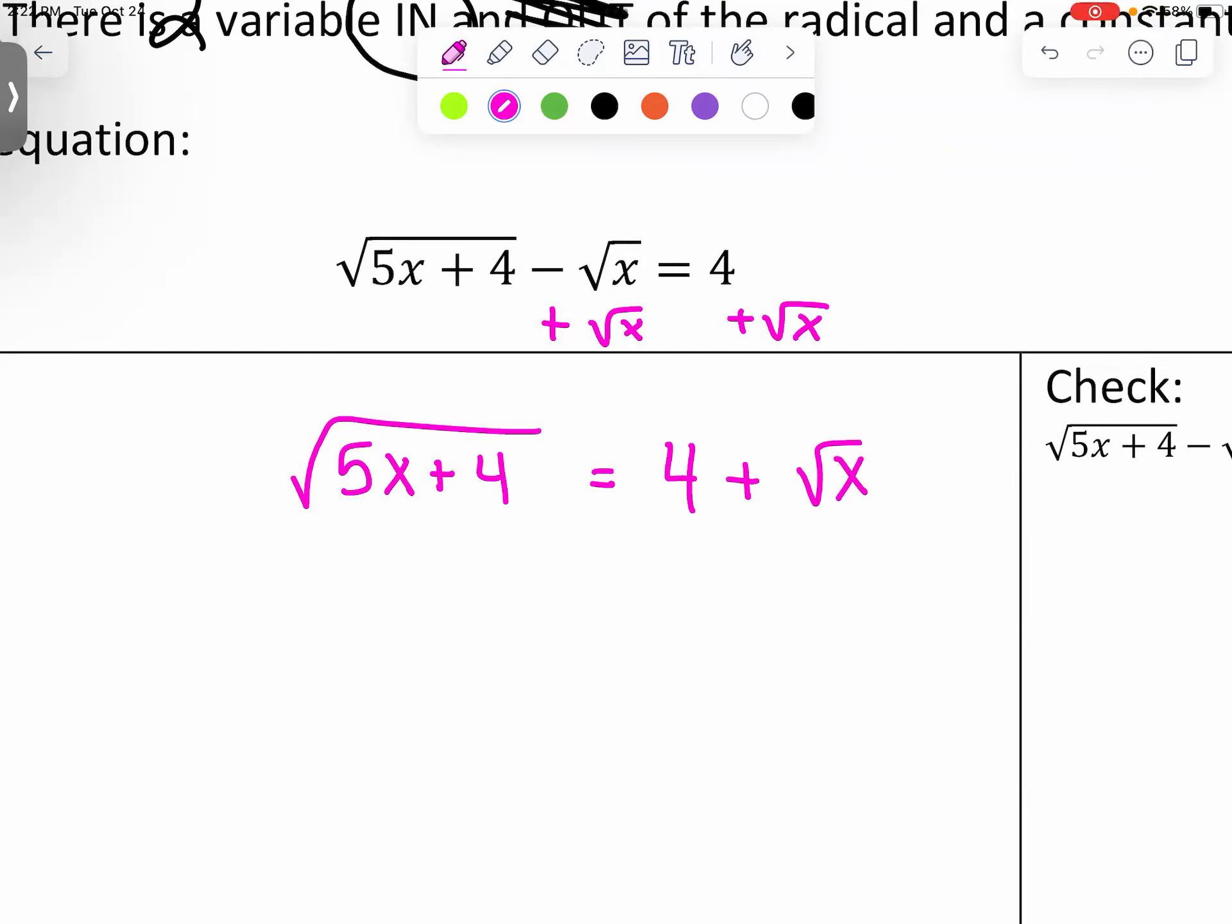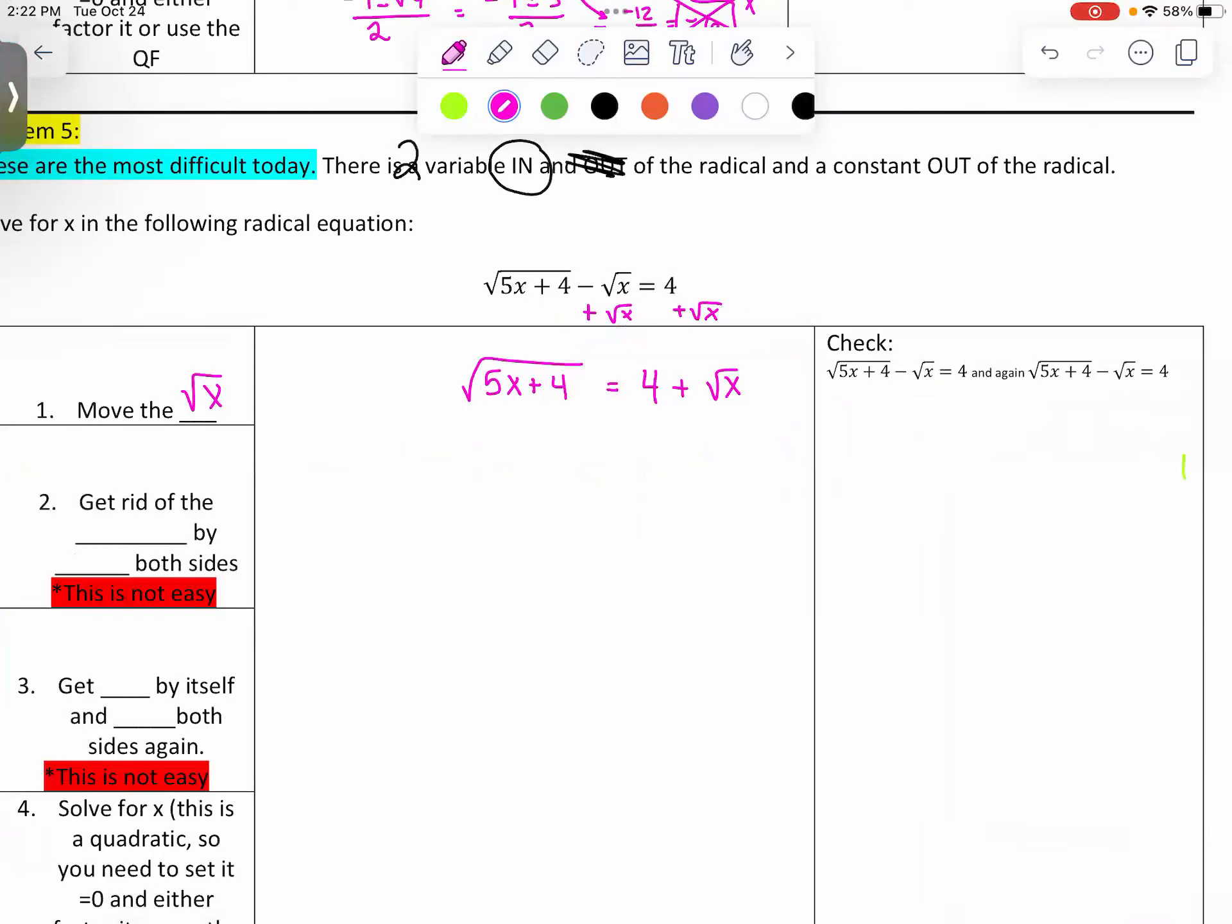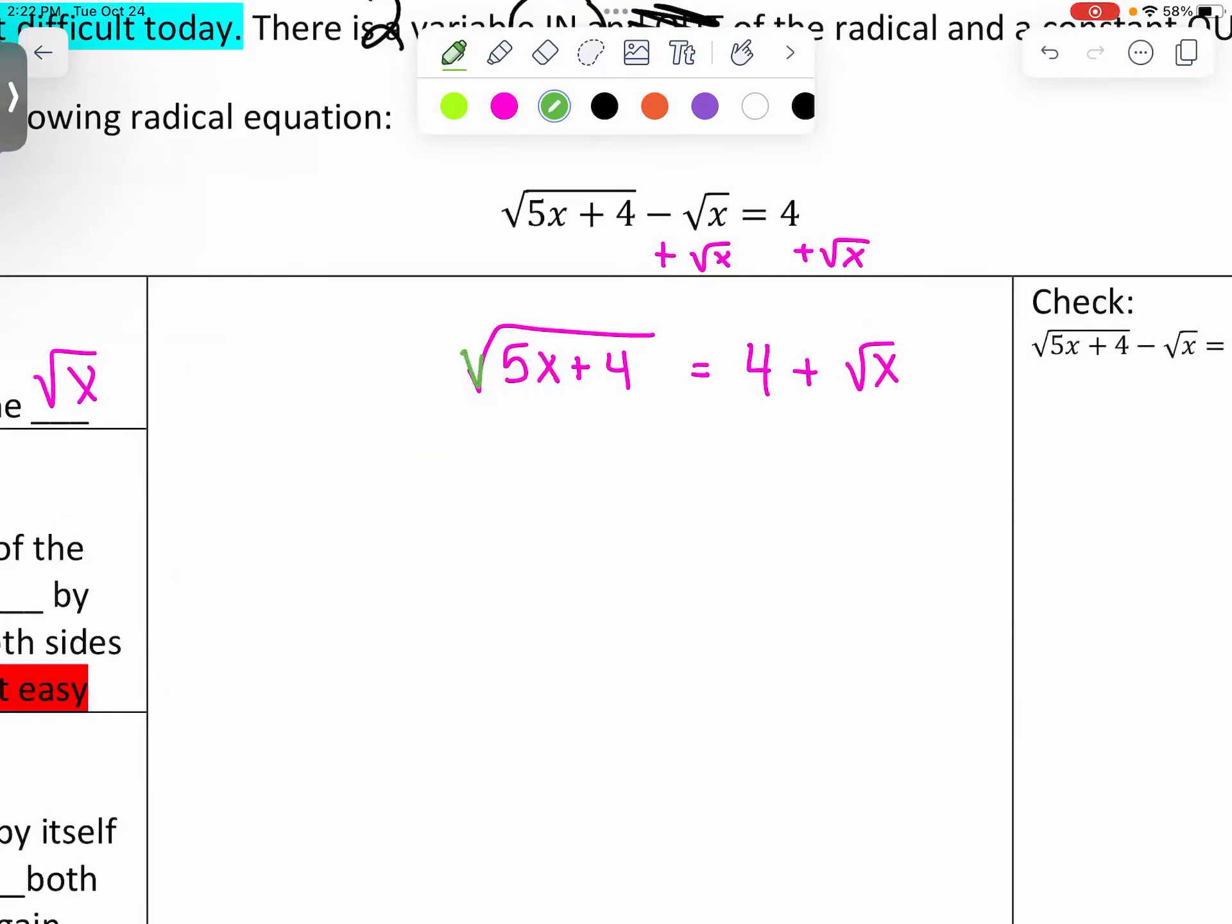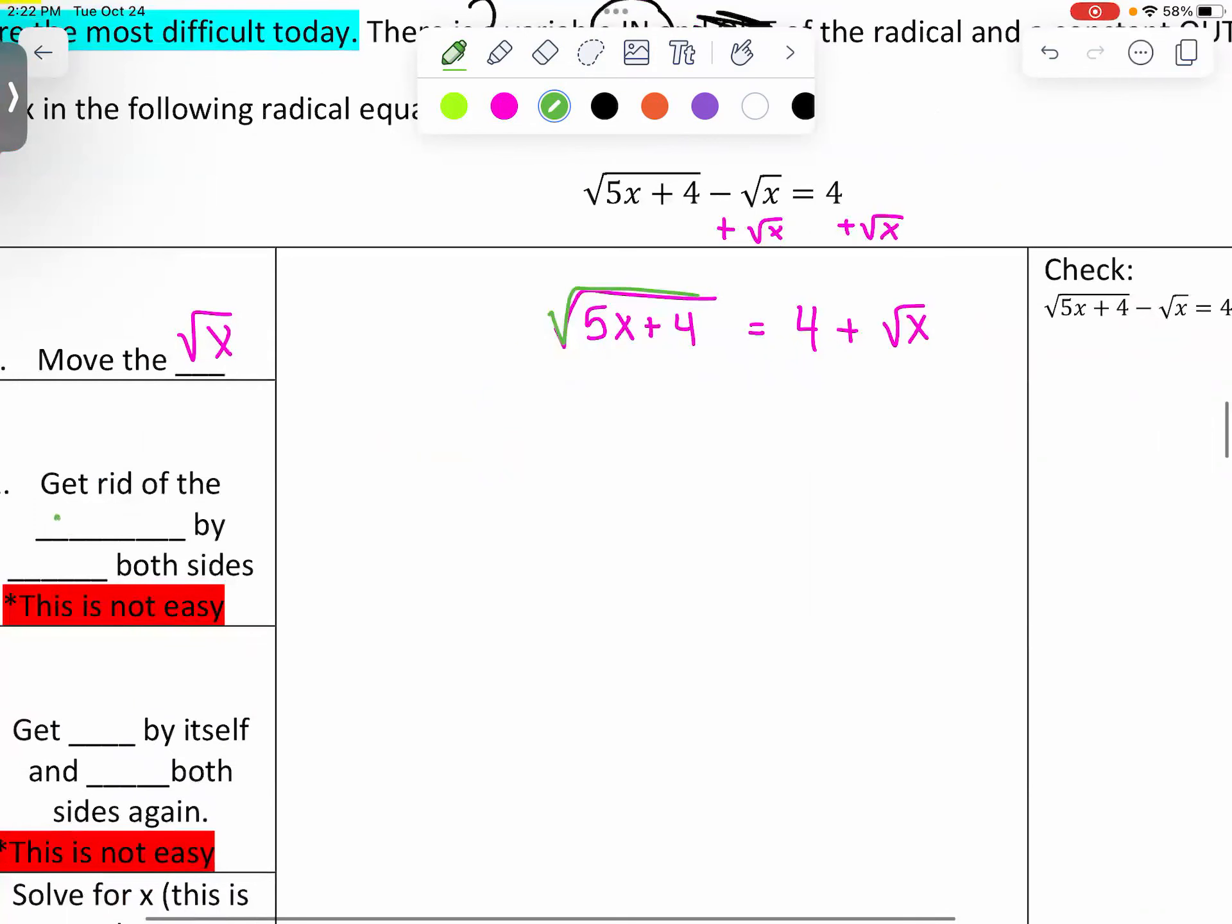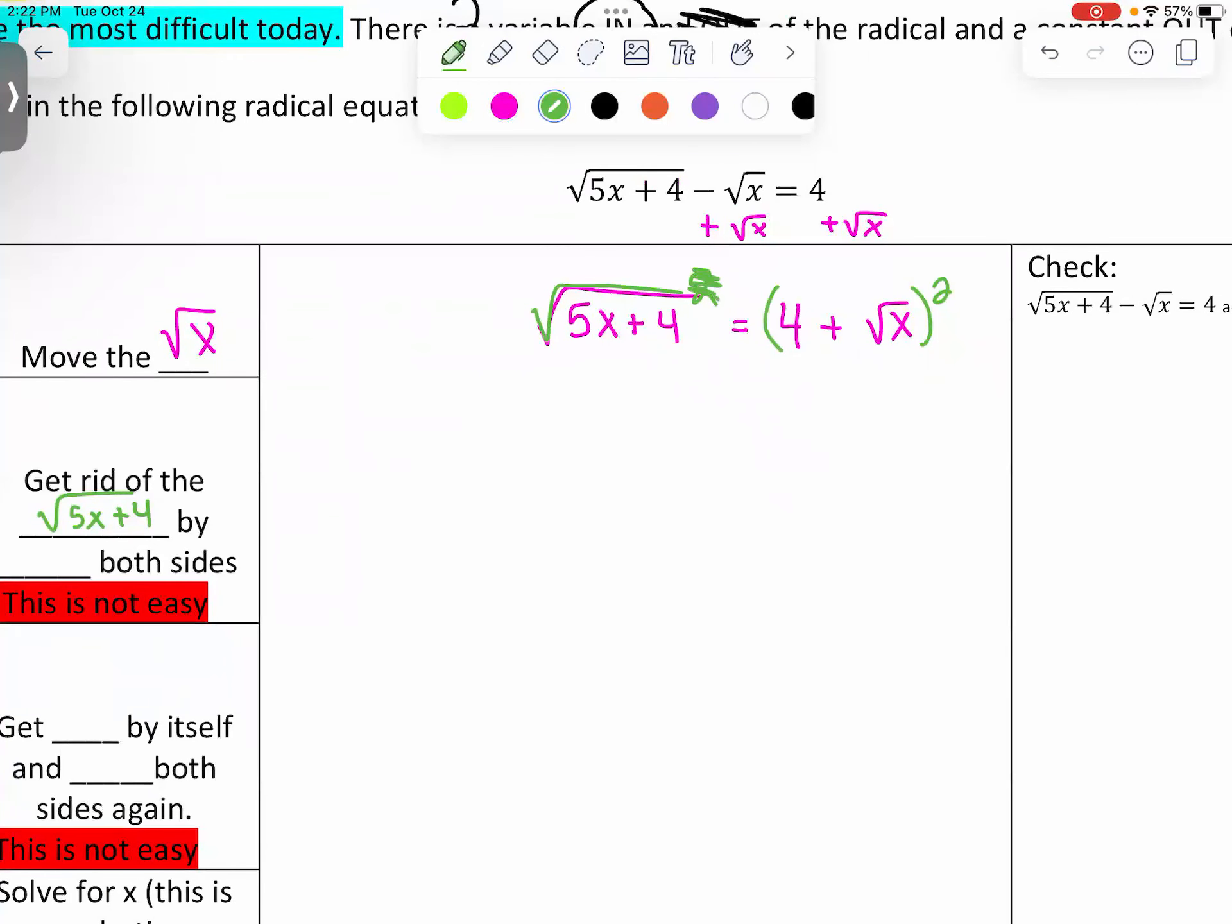Now we have to get rid of the square root around the five x plus four. Do you know, guest speaker, what gets rid of a square root? Square. That is correct. So when you square this side, you also have to square this side. So this square makes that square root go away. What's left? Five x plus four. Perfect.